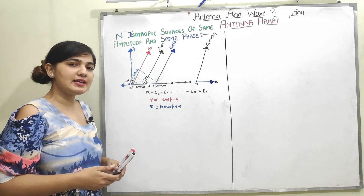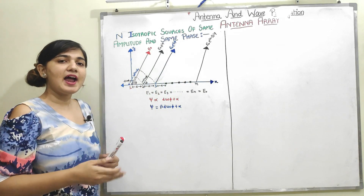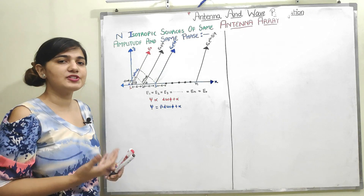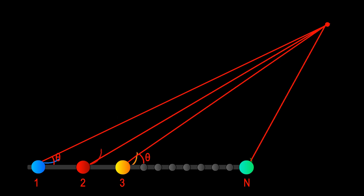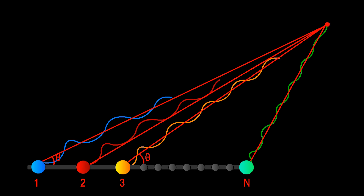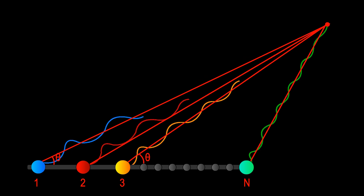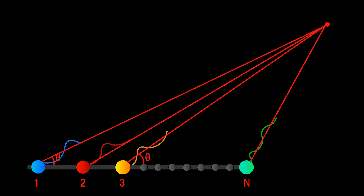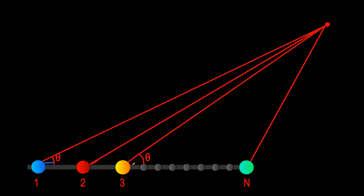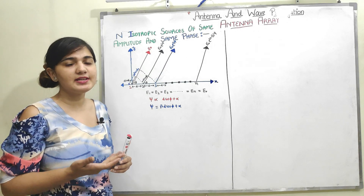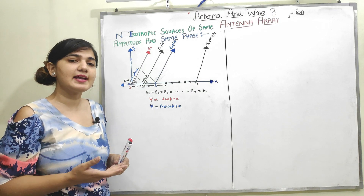Now I have to see what is the phase between all the elements of the array, and for that I need to see which element is leading and which element is lagging. From this diagram, the radiation from element N is reaching the point P fastest. So I can say that the radiation from N is leading, or the radiation from antenna 1 is lagging the most — antenna 1's radiation is reaching point P in the largest time. So I need to find out how much these antennas are leading or lagging with respect to each other.